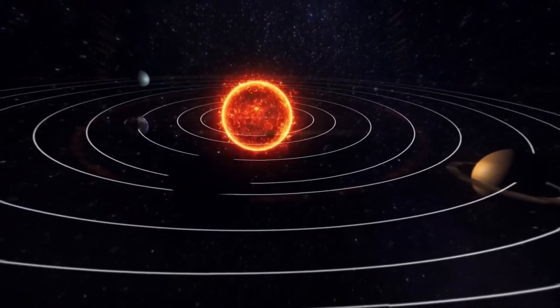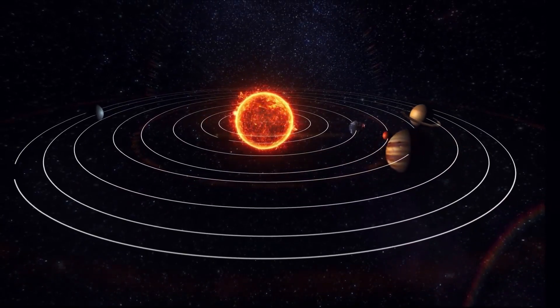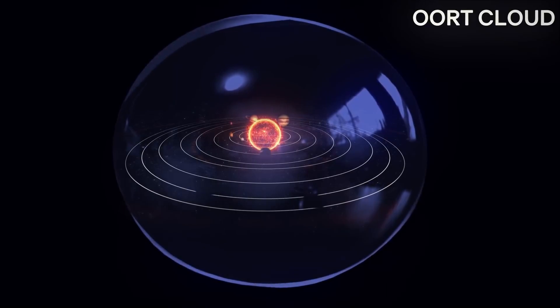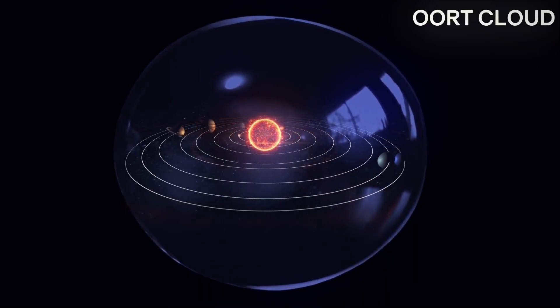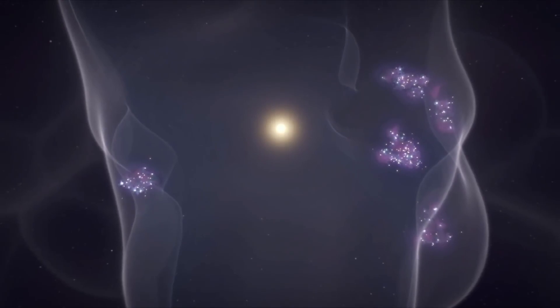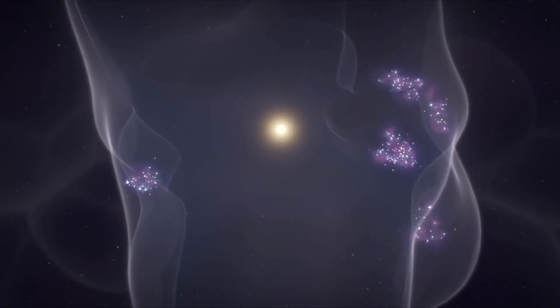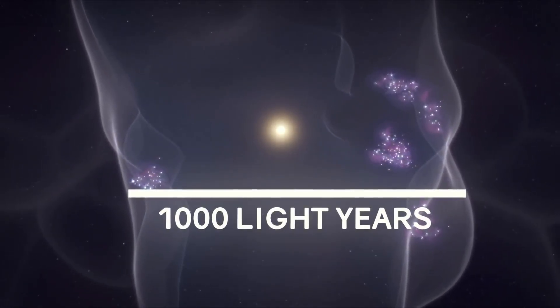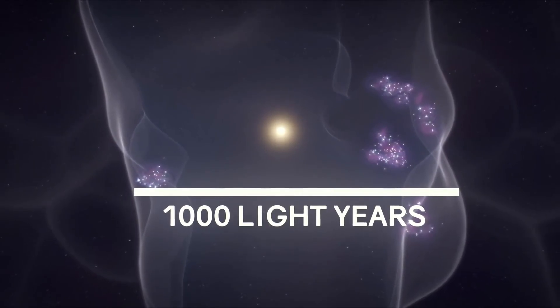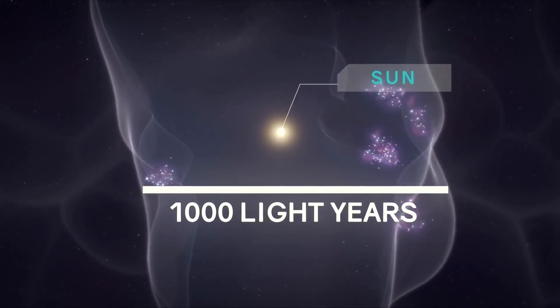It turns out that our entire solar system, including the far, far away Oort cloud, located at a distance of a light year from the sun, is immersed in a giant bubble. Its diameter is 1,000 light years. And what is remarkable, our sun is practically in the center of this bubble.